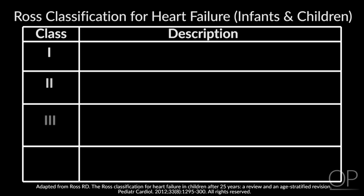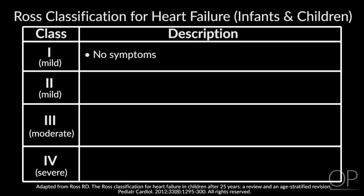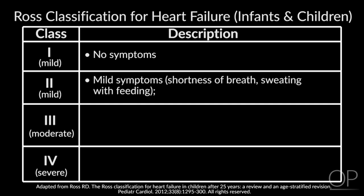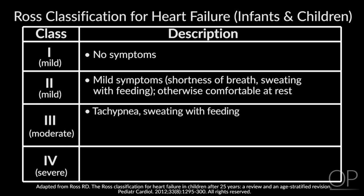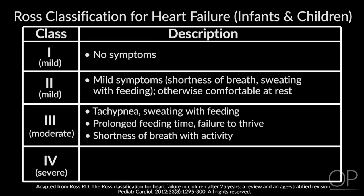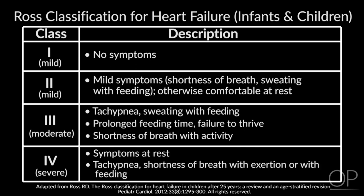Because children require a different classification, the Ross classification was created, primarily for infants and small children who cannot exhibit their symptoms as clearly as adults. Class 1 patients would be asymptomatic. Class 2 patients may have mild symptoms such as shortness of breath or diaphoresis with feeding but would otherwise be comfortable at rest; older children may have shortness of breath with mild activities. Class 3 patients may have marked tachypnea or diaphoresis with feeding, prolonged feeding times, failure to thrive, or marked shortness of breath on exertion in older children. Class 4 patients have marked symptoms even at rest such as tachypnea and shortness of breath.